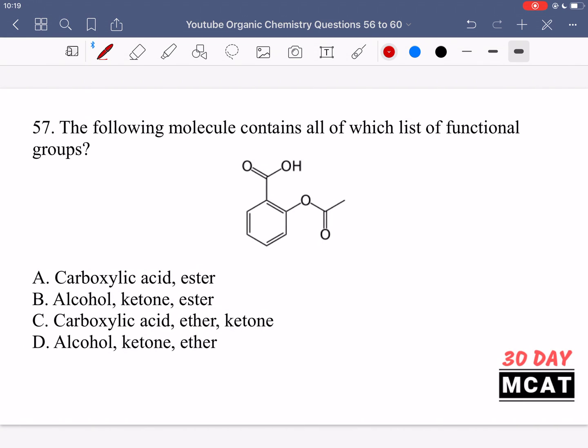Now moving on to question 57, the following molecule contains all of which list of functional groups. So the options have a list of functional groups. Let's look at the functional groups. We have in the middle a benzene ring, and then functional groups coming off of it. So this functional group, it's a specific type of carbonyl called a carboxylic acid.